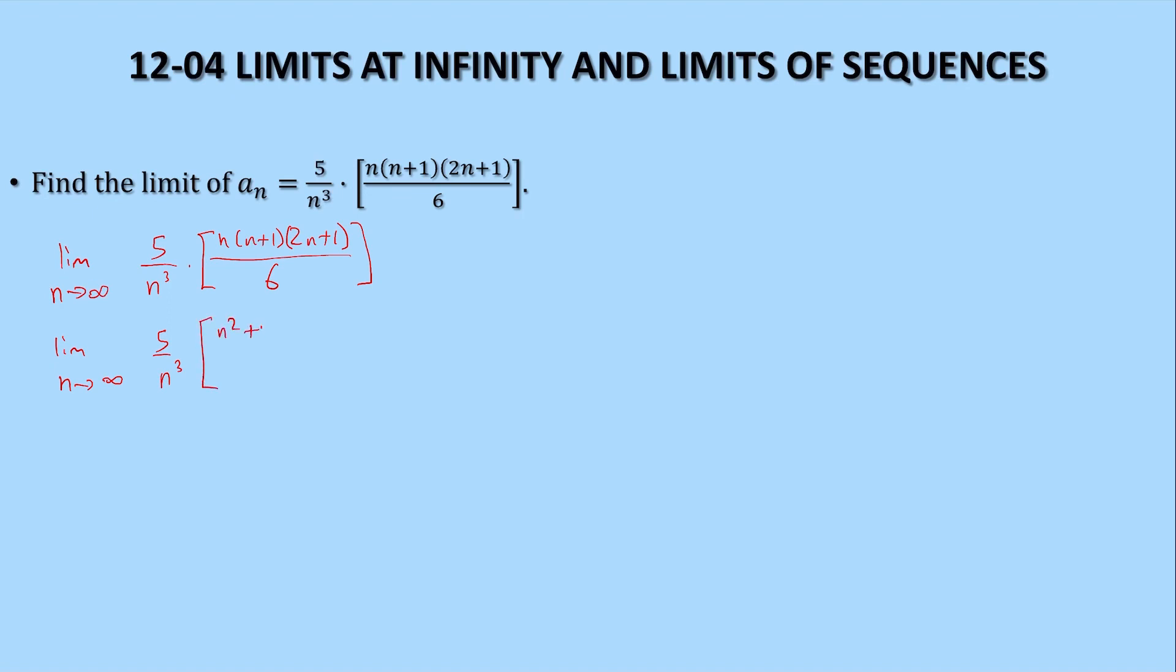So we'd have n squared plus n if we distributed the n. Then we'd have 2n cubed plus n squared plus 2n squared plus n. n squared plus 2n squared is 3n squared.